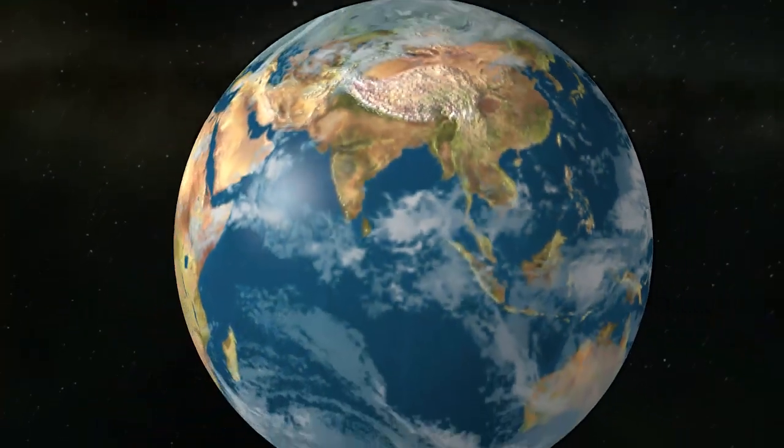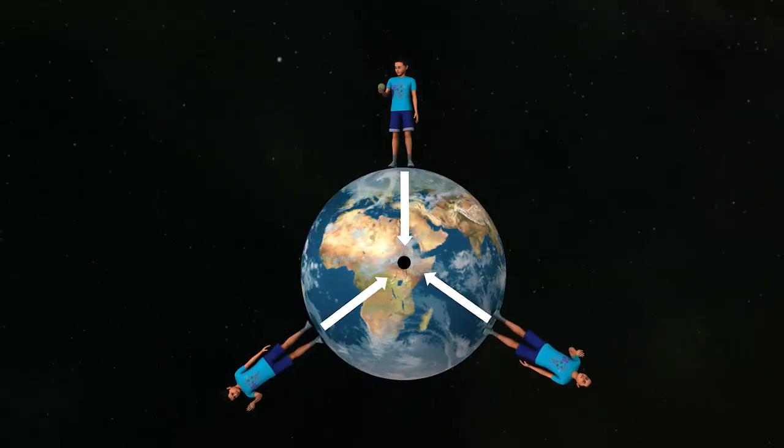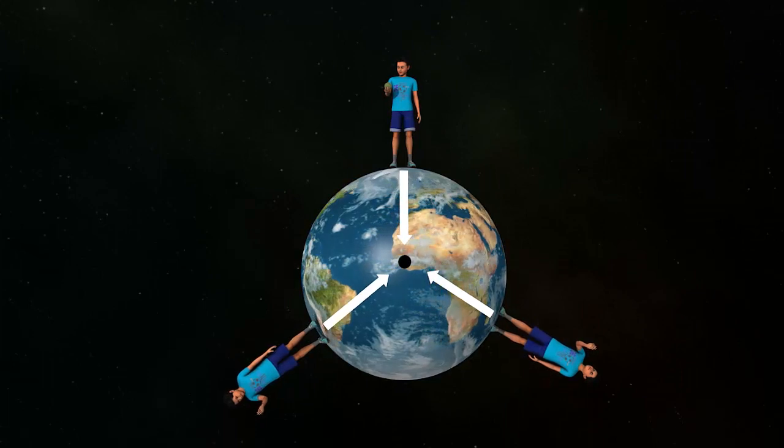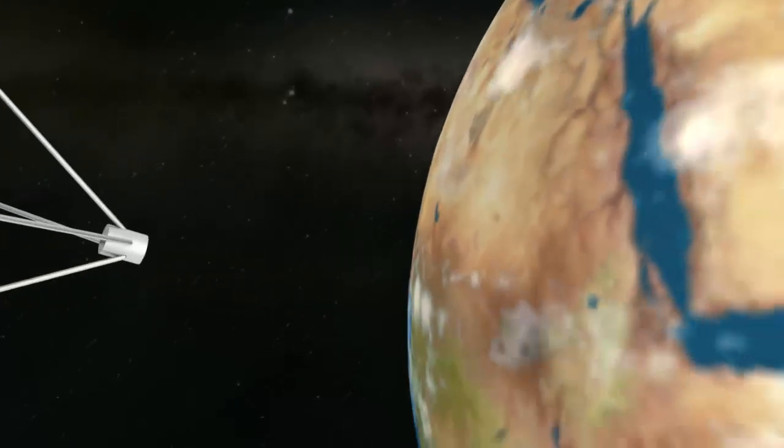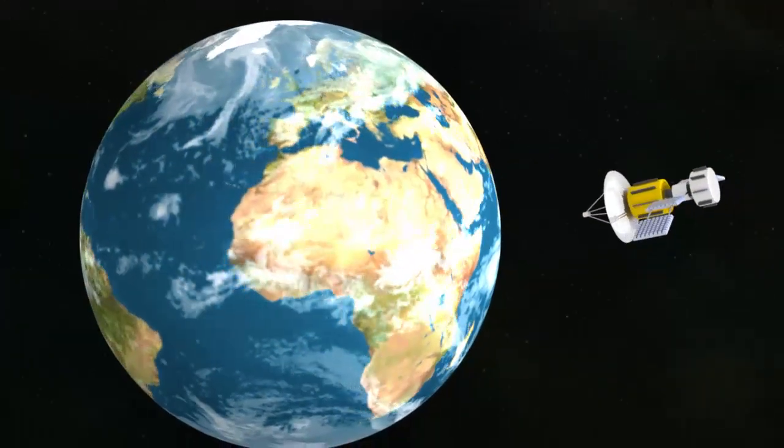In our everyday life, it is the gravitational force of the Earth that holds us to the ground. Newton's universal law of gravitation explains the motion of satellites around a planet and the motion of planets around the sun.